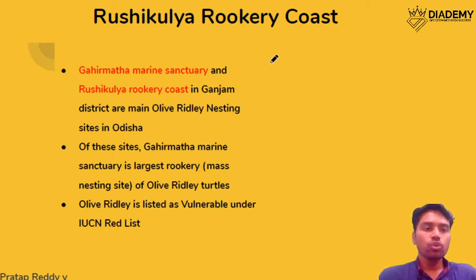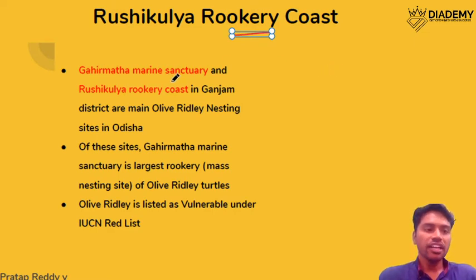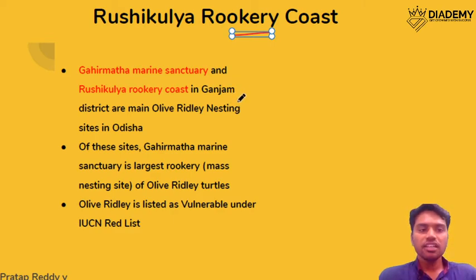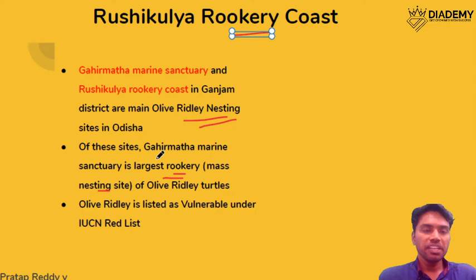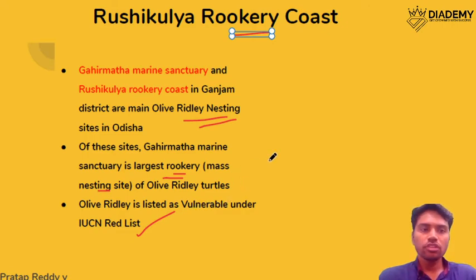Rushikulya Rookery Coast — rookery means it is a breeding site. Gahirmatha Marine Sanctuary and Rushikulya Rookery Coast in Jajpur district are the main nesting spots for Olive Ridley turtles in Odisha. Of these, Gahirmatha Marine Sanctuary is the largest rookery. This is a mass nesting site for the Olive Ridley turtle. Please remember that Olive Ridley is listed as Vulnerable under the IUCN list.